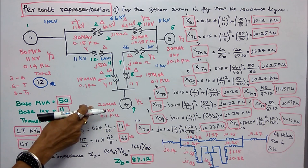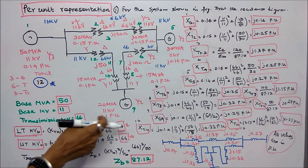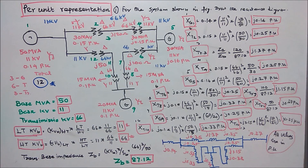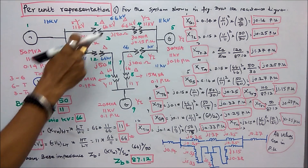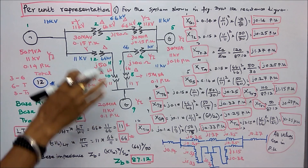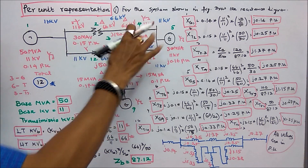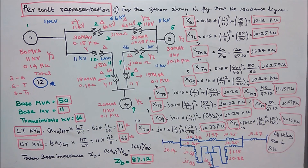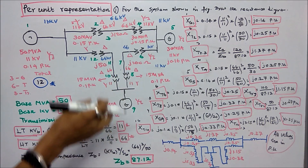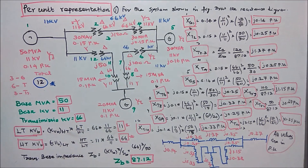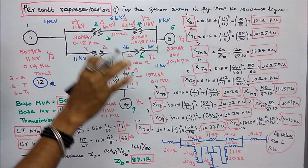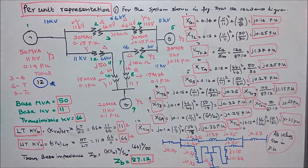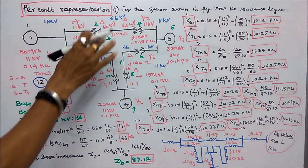Generator 2 rating is 20 MVA, 11 kV, per unit reactance is 0.1. Generator 3 is 30 MVA, 11 kV, J0.16 per unit. Transformers 1 and 2 rating is 30 MVA, 11/66 kV, per unit reactance 0.15. Transformers 3 and 4 rating is 15 MVA, 11/66 kV, per unit reactance 0.1. Transmission line actual impedance values are: J120, J100, and J50 ohms respectively.